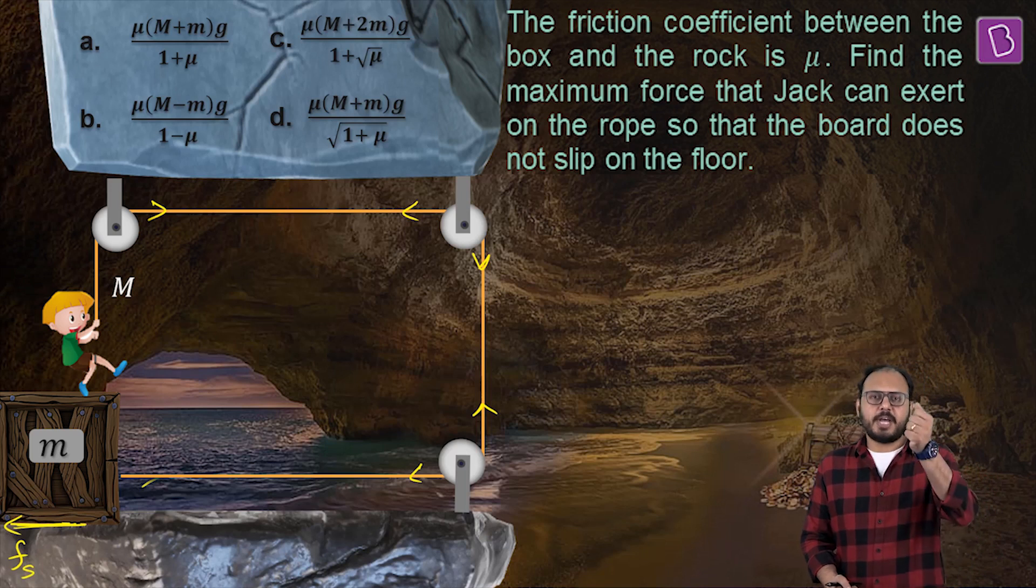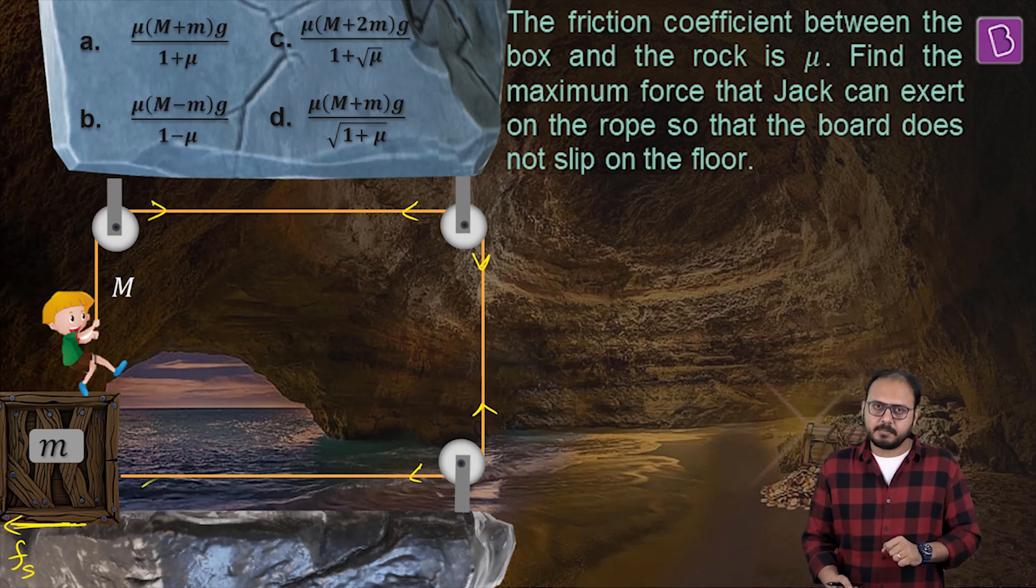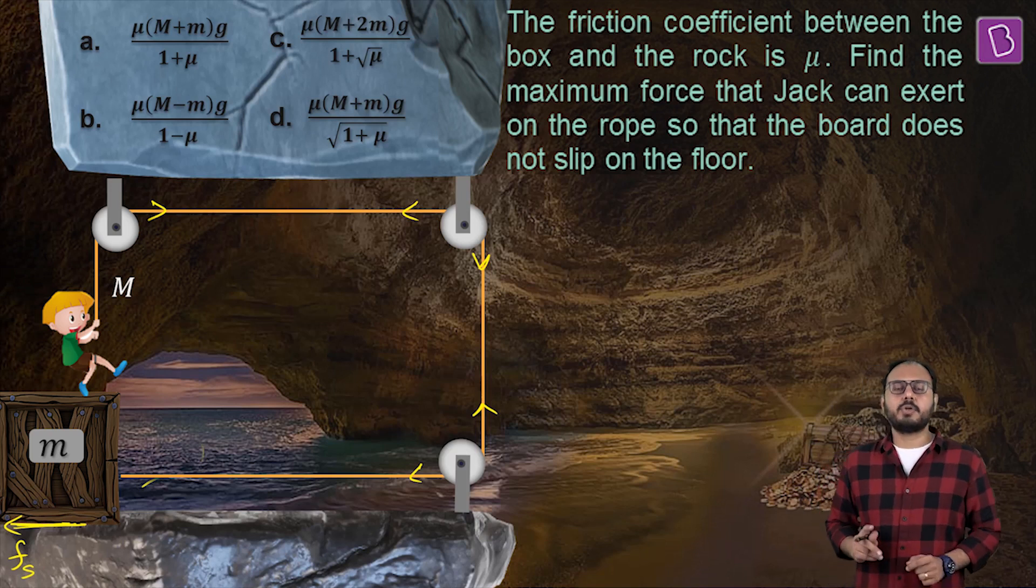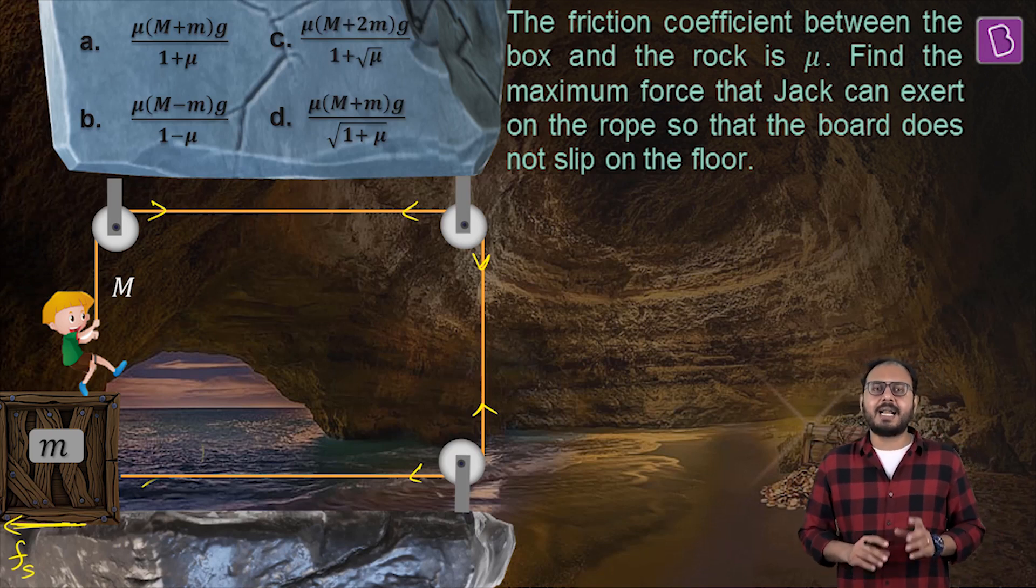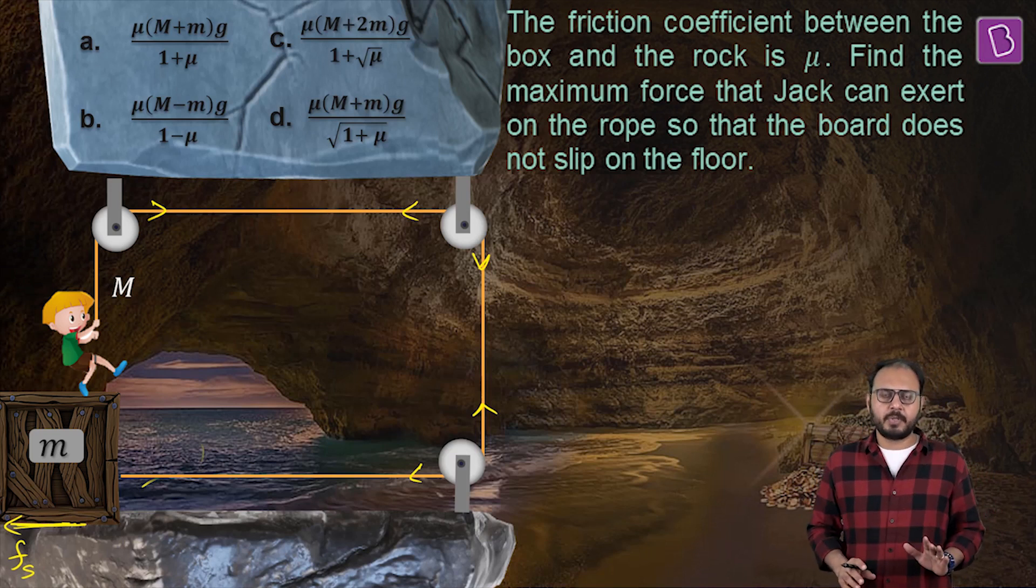As Jack pulls harder, the magnitude of tension force increases. As a result, the force on the box increases because if this is T, this is also T. Because all the pulleys and strings are ideal unless mentioned otherwise.